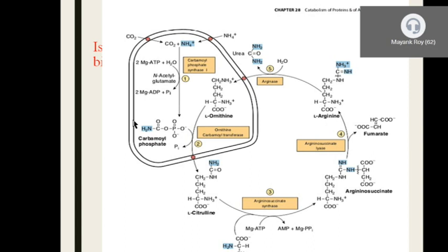Step 5: Orotic acid receives ribose-5-phosphate from PRPP via the enzyme orotate phosphoribosyltransferase (OPRTase), forming orotidine monophosphate (OMP), also called orotidylic acid. Step 6: OMP undergoes decarboxylation — the COOH group at the fifth position is removed as CO2 by OMP decarboxylase — forming uridine monophosphate (UMP). This is the first pyrimidine nucleotide synthesized in pyrimidine biosynthesis.